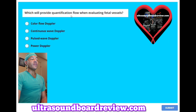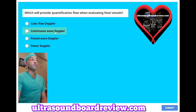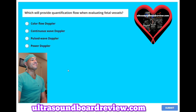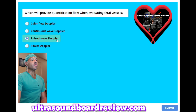Which will provide quantification of flow when evaluating fetal vessels? A. Color flow Doppler. B. Continuous wave Doppler. C. Pulse wave Doppler. Or D. Power Doppler. The answer is C, pulse wave Doppler.